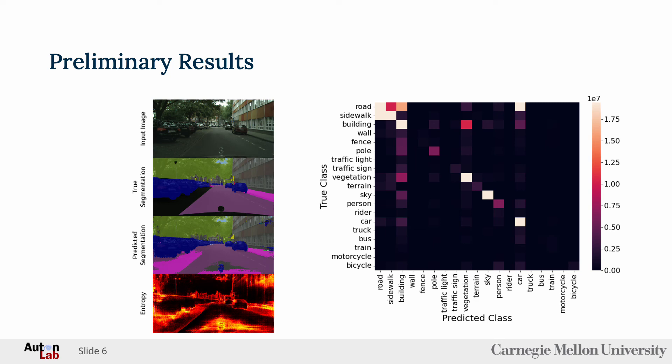In the right figure, we see the confusion matrix heat map for all the segmentations from a single MC dropout model. This figure confirms what we see in the left figure, which is that the model often misclassifies buildings and cars as other classes. Moreover, roads and sidewalks are frequently misclassified for one another.